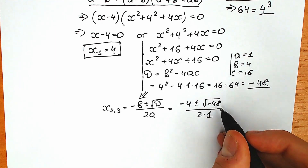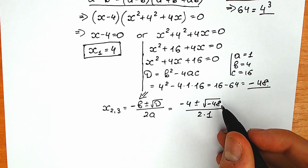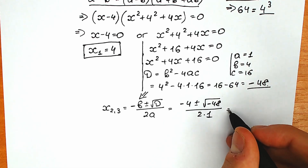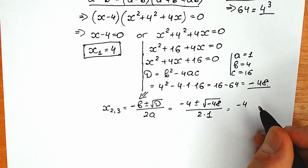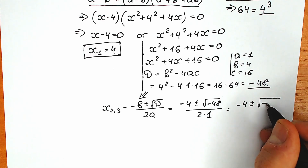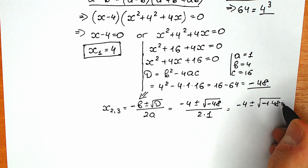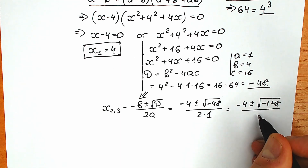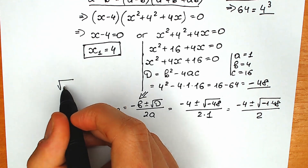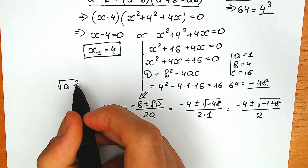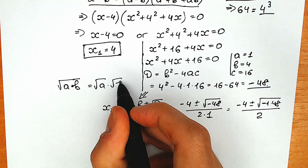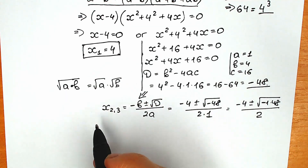One important moment: instead of minus 48, let's write minus 1 times 48. So we have plus-or-minus square root of minus 1 times 48, divided by 2. Now let's use the property that the square root of a times b can be split as square root of a times square root of b. Let's apply this rule.